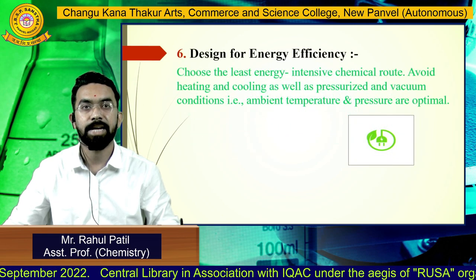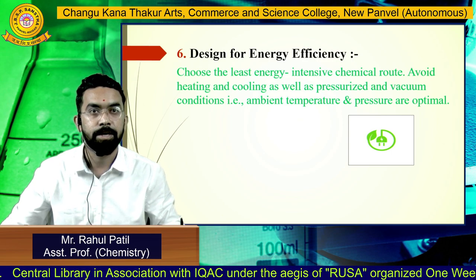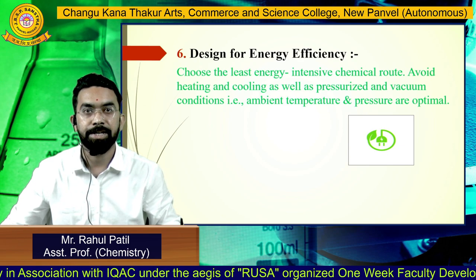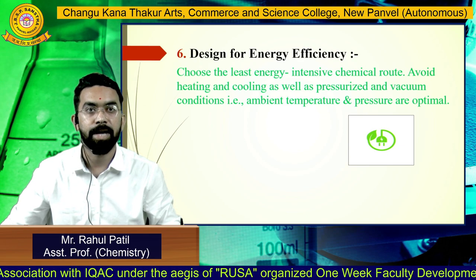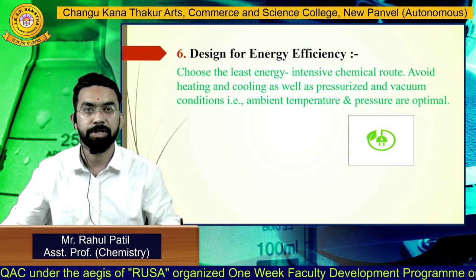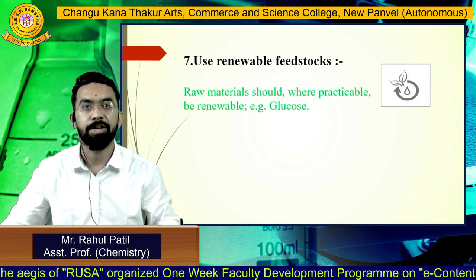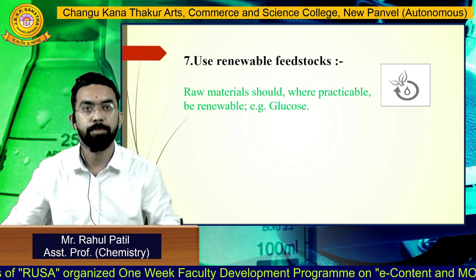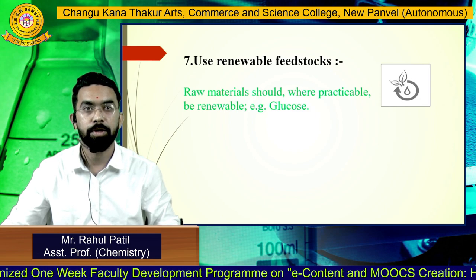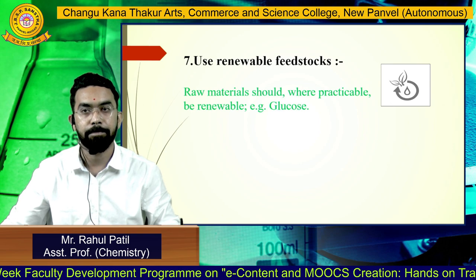Principle 6: Design for Energy Efficiency. Choose the least energy-intensive chemical route and avoid heating, cooling, and vacuum conditions where possible. Principle 7: Use Renewable Feedstock. Raw materials should be renewable rather than depleting ones. Where practicable, raw materials should be renewable. Example: glucose.